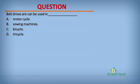Question 2: Belt drives can be used in ___. A. Motorcycle. B. Sewing machines. C. Bicycle. D. Tricycle. The correct option is B: sewing machines.